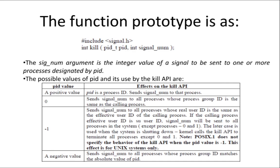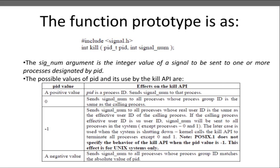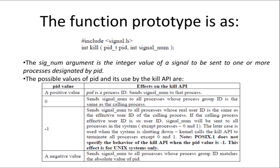The kill API is defined in most Unix systems and the POSIX standard. The function prototype of the kill API has two arguments: one is the process ID, stored in the data type pid_t, and the other is the signal number, which is an integer. The signal number is the integer value of a signal to be sent to one or more processes designated by the PID. Each signal has an integer identifier assigned to it.